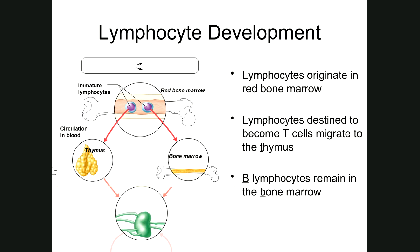T cells get their name because once they've reached a certain point in maturation, they're going to migrate from the bone marrow to the thymus, which is that lymphoid organ that overlays the heart, and they complete their maturation there. That's why T lymphocytes or T cells are known as T cells — it stands for where they're developing, which is in the thymus.